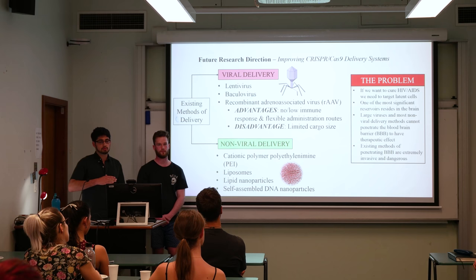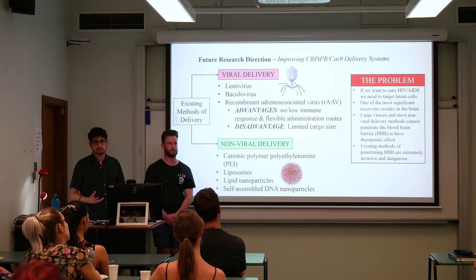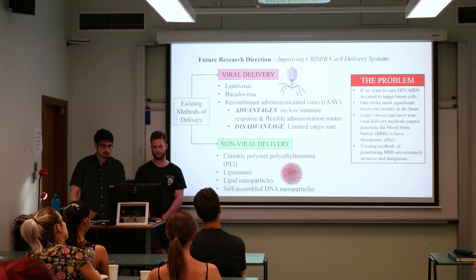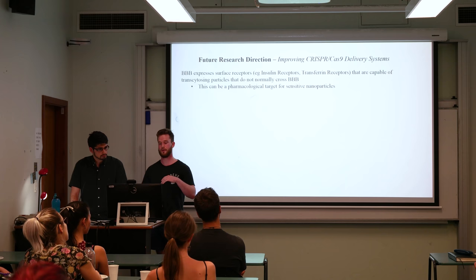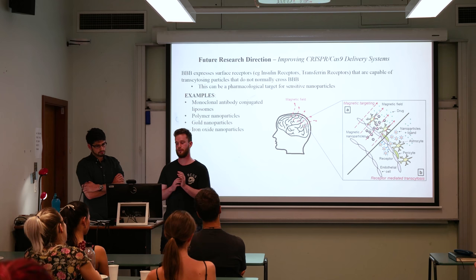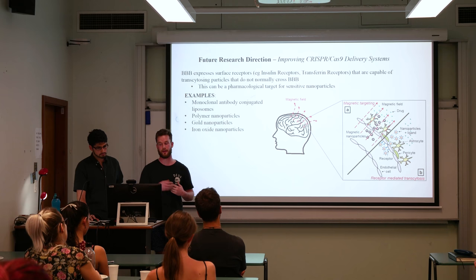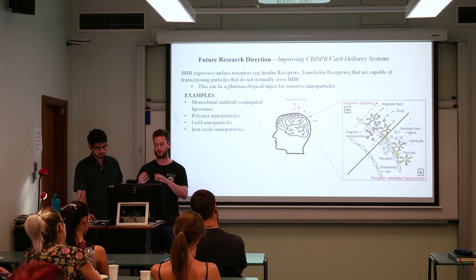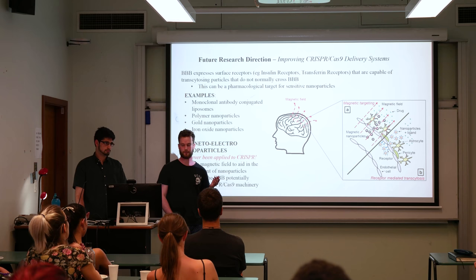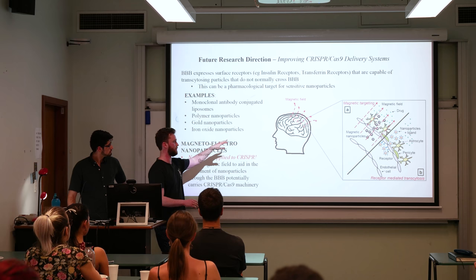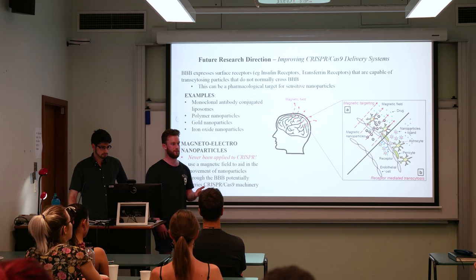The problem with both delivery mechanisms is that to eliminate latent cells, they must cross the blood-brain barrier, because many latent cells exist in the brain. The blood-brain barrier expresses receptors that can take up large proteins and charged molecules that don't normally get through. These could become pharmacological targets — we can develop nanoparticles with appendages sensitive to those receptors to activate them and allow CRISPR-loaded nanoparticles to cross the blood-brain barrier. Another novel approach uses magnetoelectric nanoparticles: by applying an external magnetic field to the patient, these charged nanoparticles can be pushed across the blood-brain barrier to deliver the CRISPR therapeutic effect and kill latent cells.